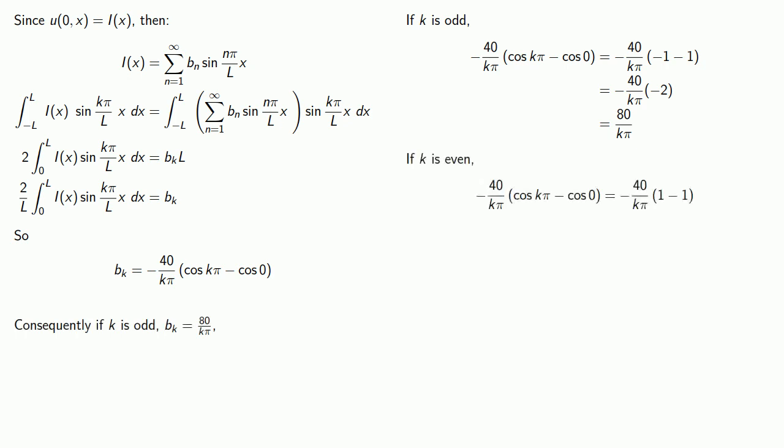On the other hand, if k is even, then cosine of an even multiple of pi is going to be 1, and so bk is going to be 0.